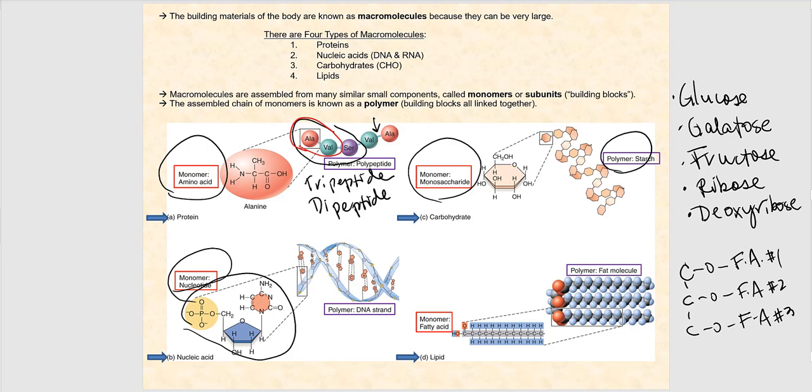If a lipase breaks off one of the fatty acids, we are now down to a diglyceride. If we break off another fatty acid, then we have a monoglyceride. So the lipases break those ester linkages, and this is how we absorb the fat coming from our diet.